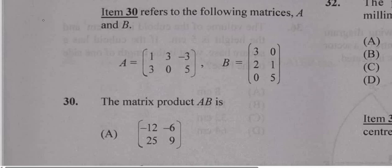So we have item 30 refers to the following matrices, A and B, and we want to find the product of both matrices.